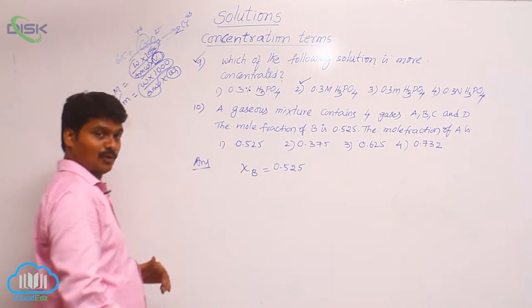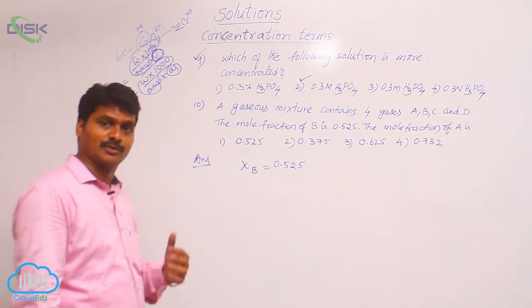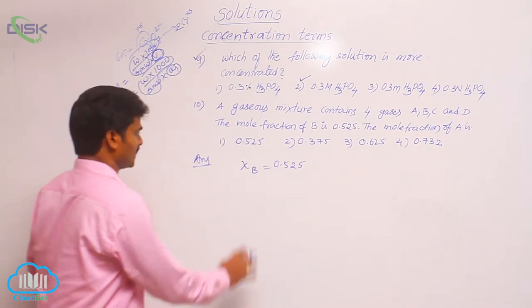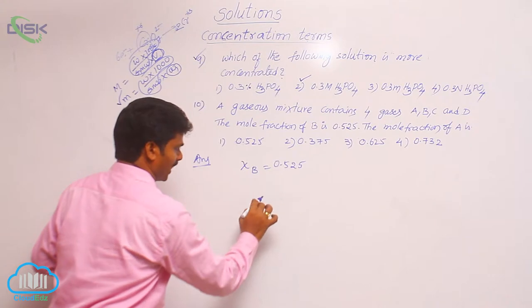But you know, sum of mole fractions of all the components in the solution must be 1. That means x_B is already 0.525.